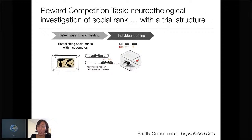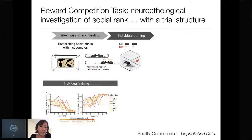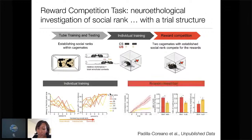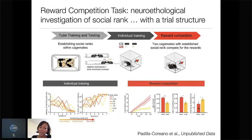Then we train the animals on a really simple task: there's a conditioned stimulus that predicts reward delivery in an adjacent port — just Pavlovian conditioning. Animals regardless of rank all learn this task well and perform equally when alone. Then we take two cage-mates with established relative social ranks and put them in there to compete for rewards. We were happy to see this cross-validated with other measures of dominance. Dominant animals win more, occupy the port more, push more and succeed when they push, and are displaced less often — all what we'd consider dominance behaviors in this novel reward competition task.